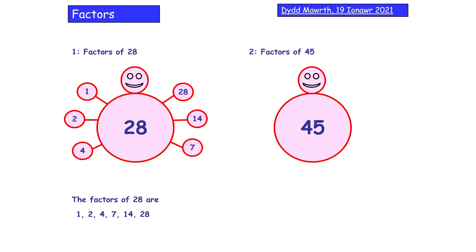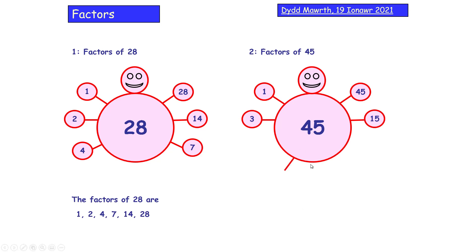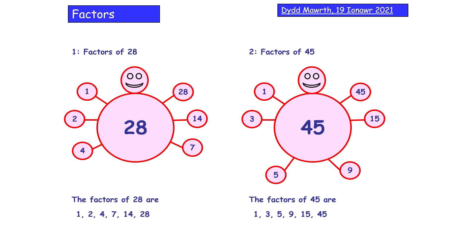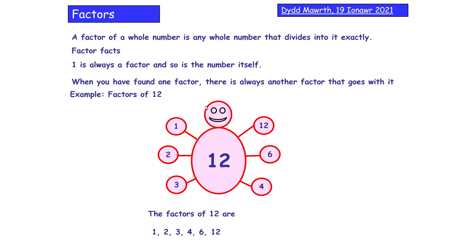Factors of 45: 1 and 45. 2 doesn't go — it's not even. 3 does because 4 plus 5 is 9, which is in the 3 times table: 3 times 15. 4 doesn't go. 5 goes because it ends in 5: 5 times 9. 6, 7, 8 don't go, so we have all our factors. Hit pause and copy down the factor facts and the factor spider example for 12.